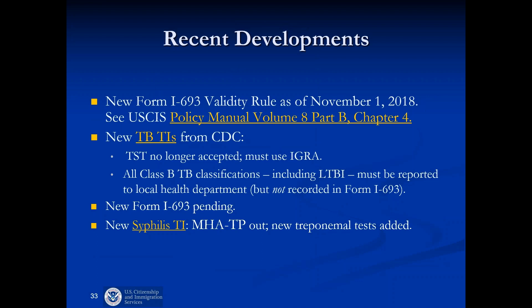Recent developments include a citation to the USCIS Policy Manual about the new validity rule, a new version of Form I-693 in process, and new TB requirements including the elimination of the tuberculosis skin test (TST). On the new form, the entire half-page or more dealing with the TST is simply gone, with only a reference to the IGRA remaining.